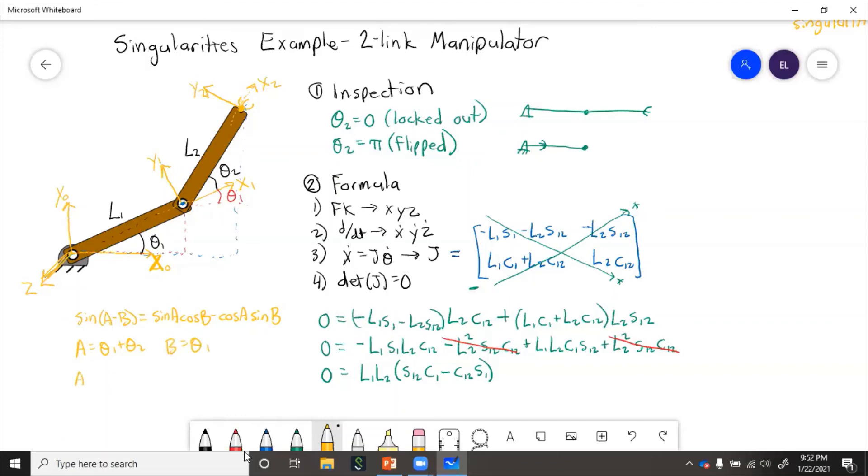So a minus b equals theta one plus theta two minus theta one, which equals theta two. So now this becomes...